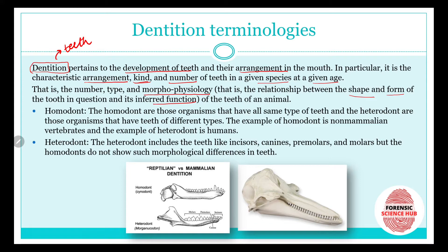Let's start with homodont and heterodont. In homodont, the word 'homo' means single, so homodonts are organisms that have only one type of teeth. Heterodont, where 'hetero' means many, includes organisms with different types of teeth — like incisors, canines, premolars, and molars.